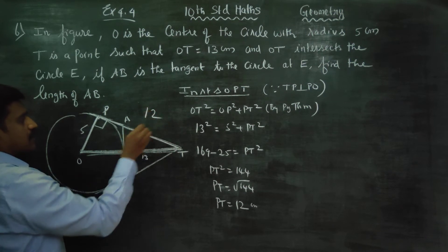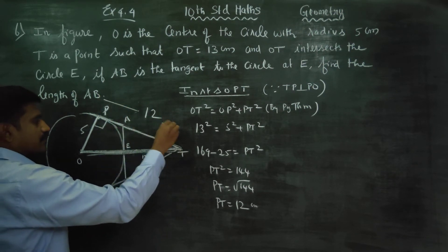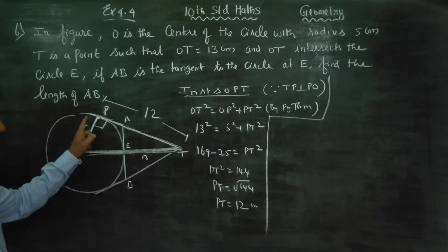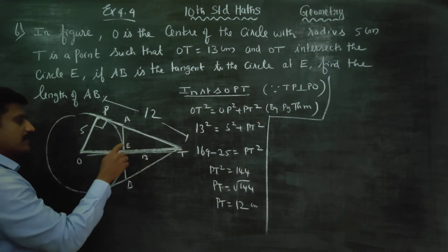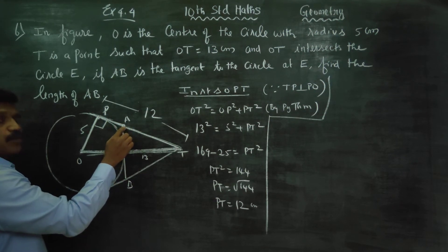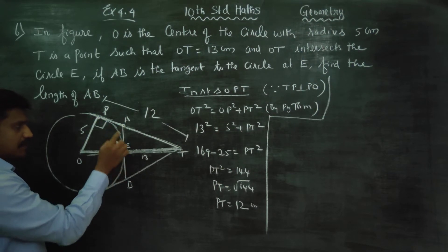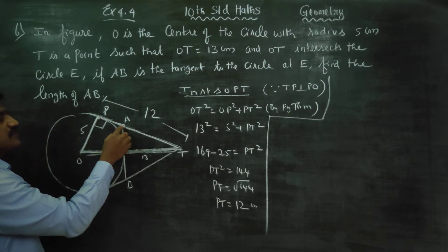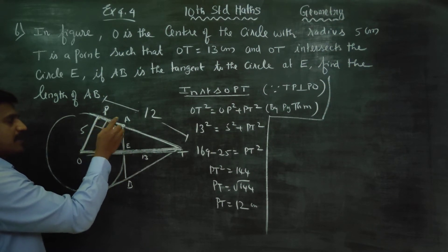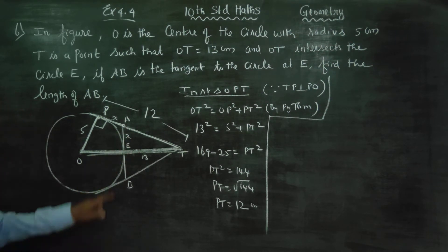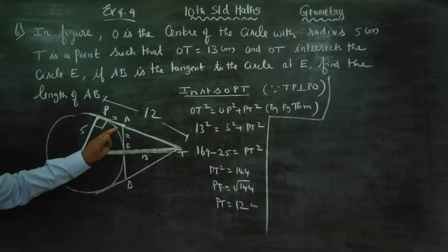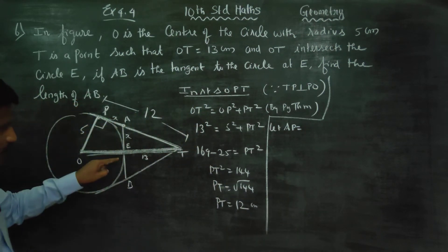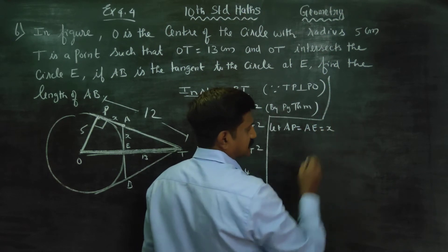We have found the value of PT equals 12. Now, T is an external point and two tangents are drawn from it to the circle. Any two tangents drawn from an external point to a circle are always equal. So, letting AE equal x, we have AP equal to AE equal to x.